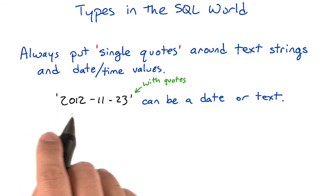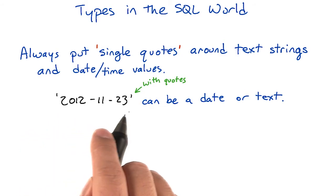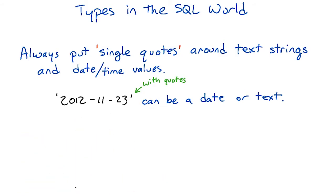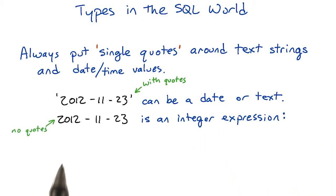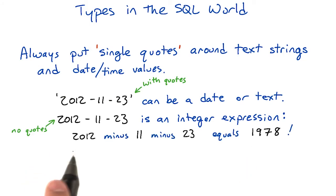If you write 2012-11-23 inside single quotes, SQL can interpret that as a date or as text. But if you write 2012-11-23 with no quotes around it, it can only interpret it as an integer expression. It will think you mean 2012 minus 11 minus 23, which equals 1978, which is probably not what you wanted.